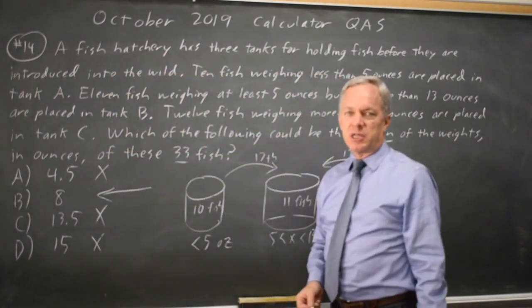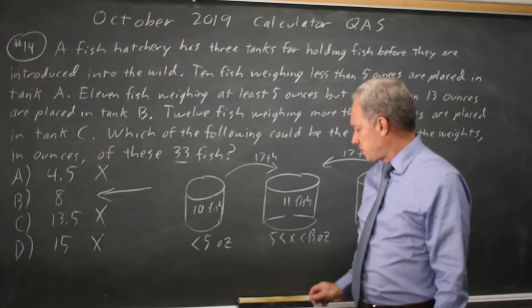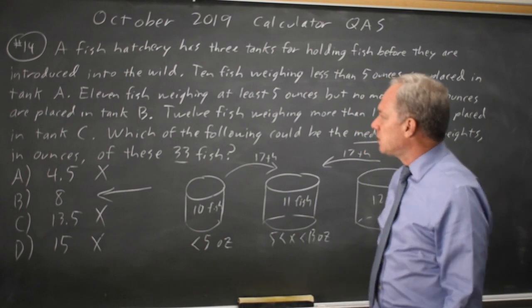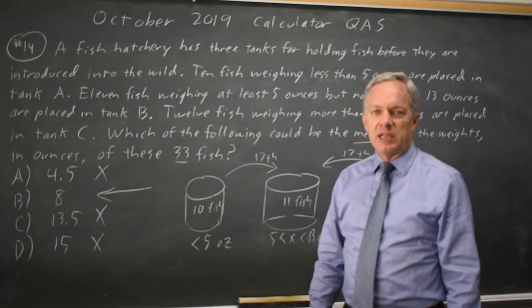Or if a fish is in the middle tank, the only choice that works from the choices they gave us would be 8. So the median of the weights in ounces of these fish could be 8.